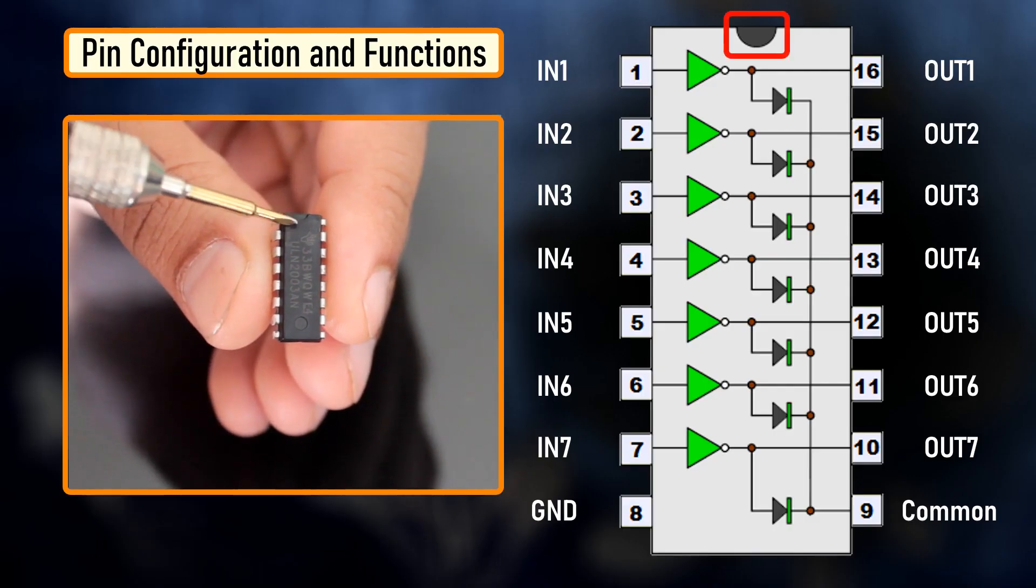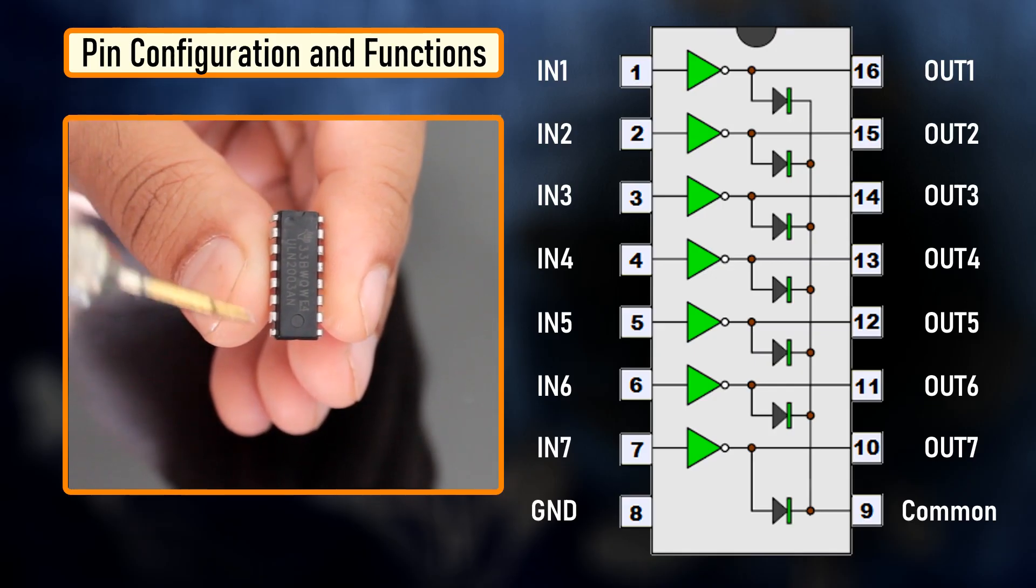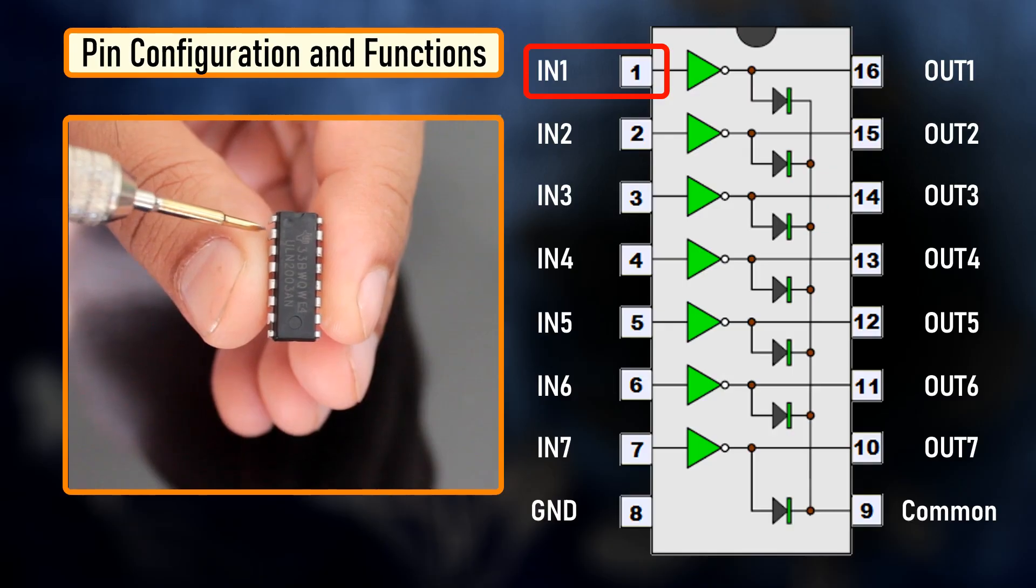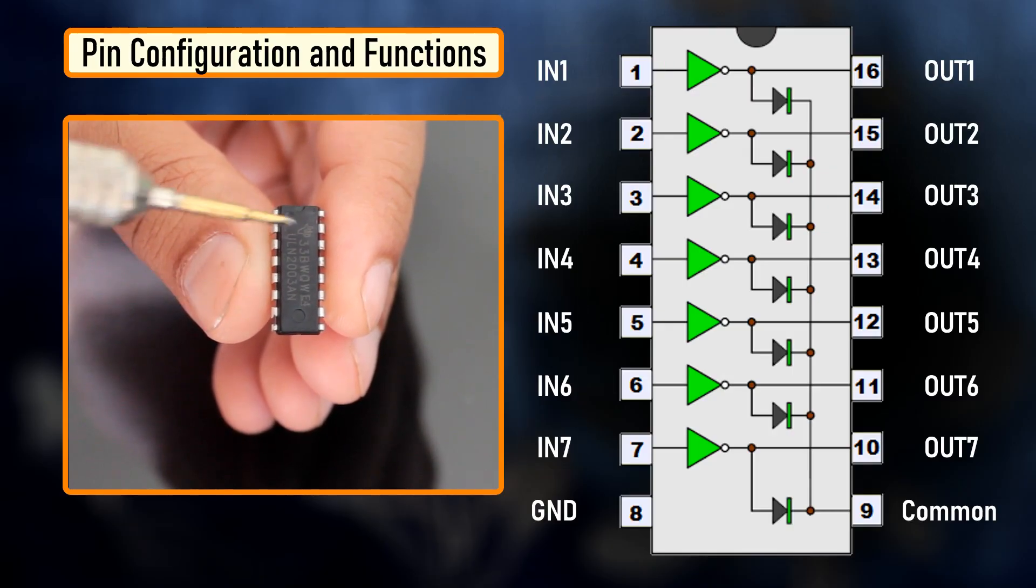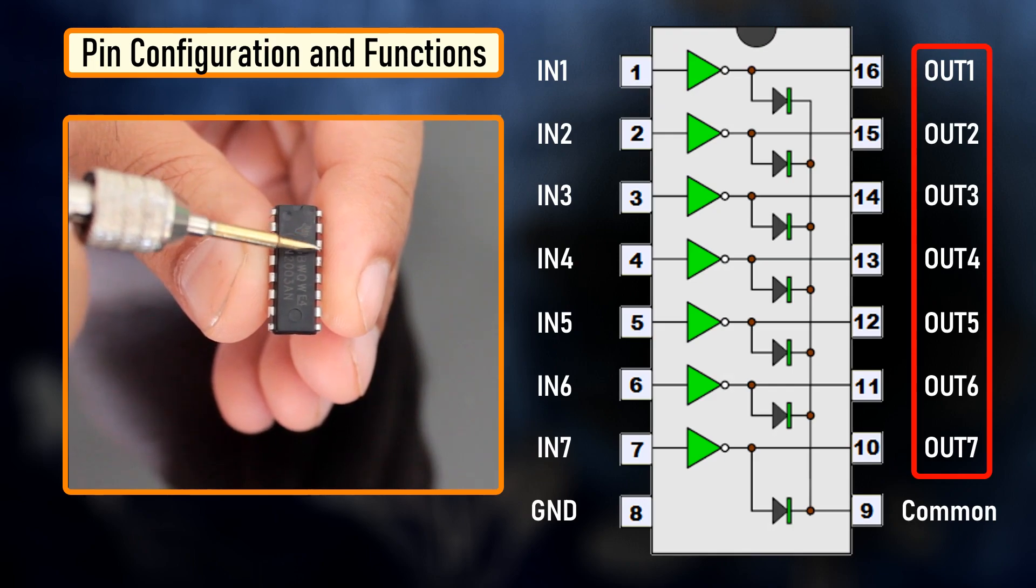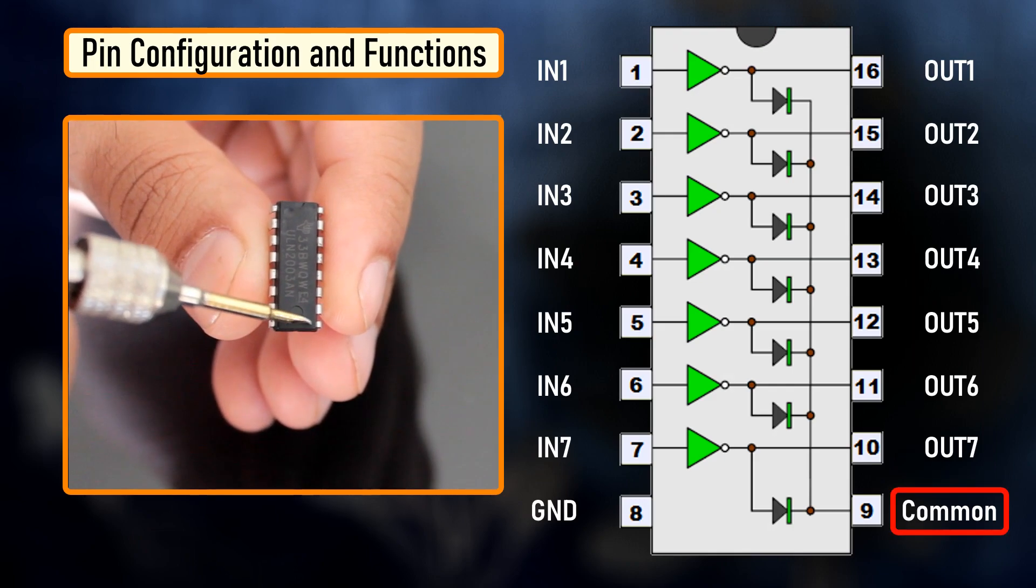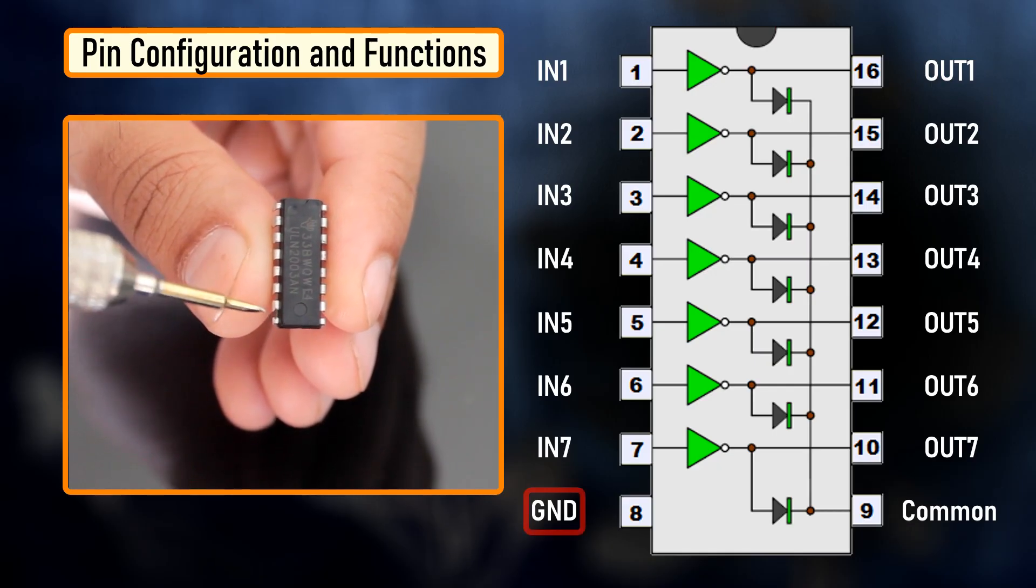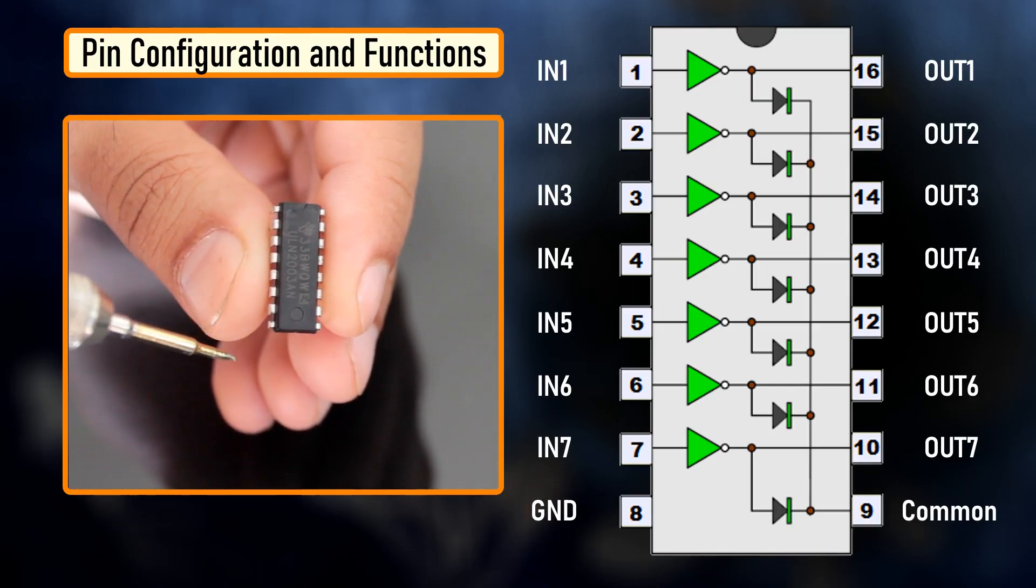The notch on the top indicates the starting and stopping point of the numberings on the chip. Starting from left to right, going counterclockwise, this is pin number 1 of the IC. On the left hand side, pin number 1 to 7 are the base inputs. On the right hand side, pin number 10 to 16 are the collector outputs. Pin number 9 is the common cathode for flyback diodes required for inductive loads. And pin number 8 is the common emitter shared by all channels of the IC. This pin is typically tied to ground.